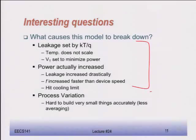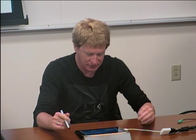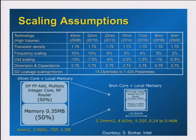Beyond thresholds, another critical issue is process variation, which is becoming more and more important as we scale. At 5V supply with a 500 mV threshold, a 50 mV variation in threshold doesn't matter much. But if your threshold is at 300 mV and your supply is 300 mV, a small threshold voltage change will have a huge impact on delay and energy. So variations are becoming more and more important to design around.